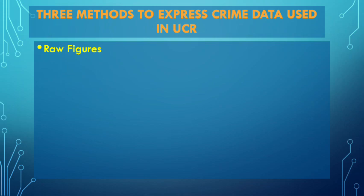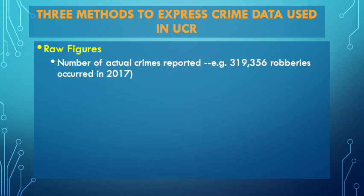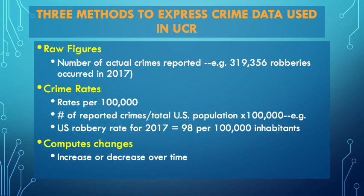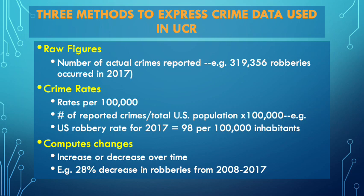It's important to understand the different ways crime data is expressed in the UCR to avoid misinterpreting how much crime is occurring. One way is raw figures — simply the number of crimes of a given type reported to police. For example, in 2017 there were 319,000 robberies in the United States. That's a large number, but without population context it tells an incomplete picture.